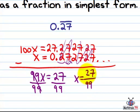We now need to find the GCD of the numerator and denominator, and I see that they both have a 9. So I have 27 divided by 9, which is 3, 99 divided by 9, which is 11. And there we go.